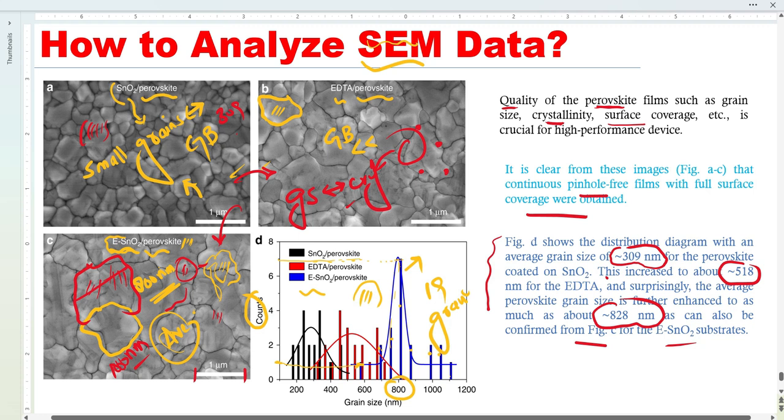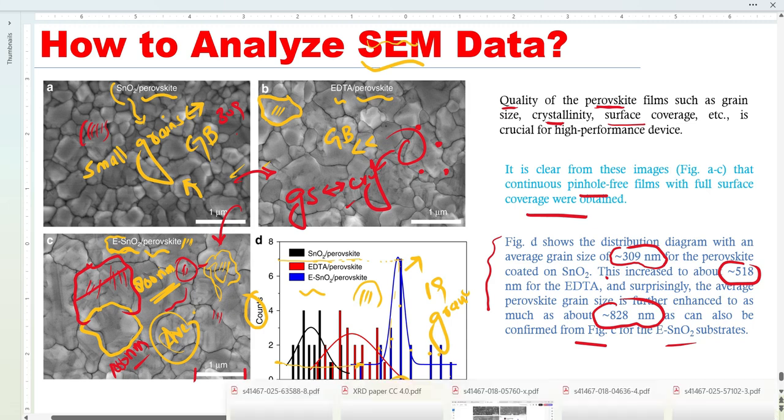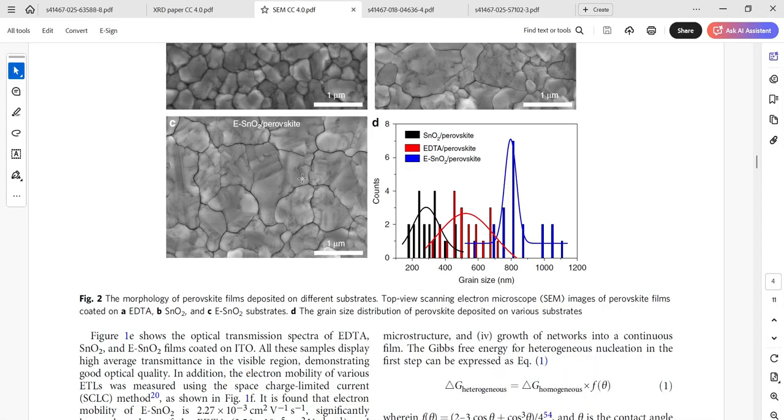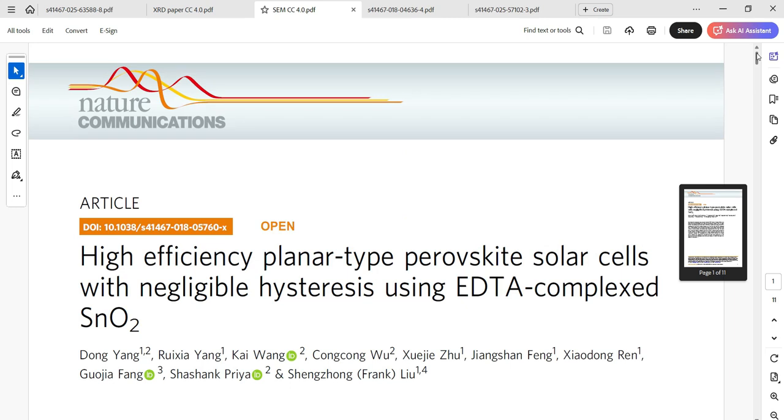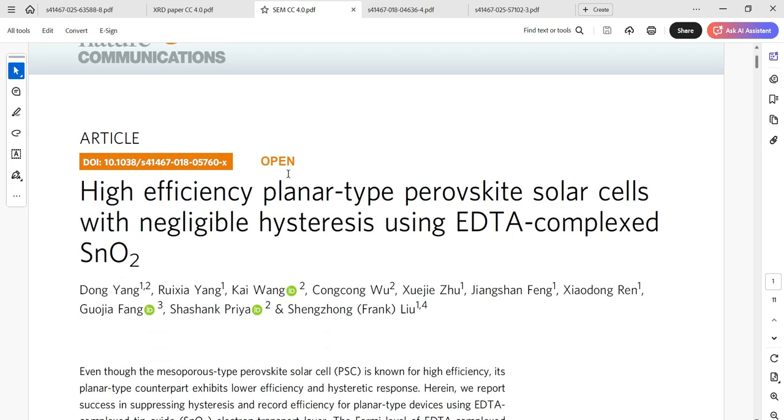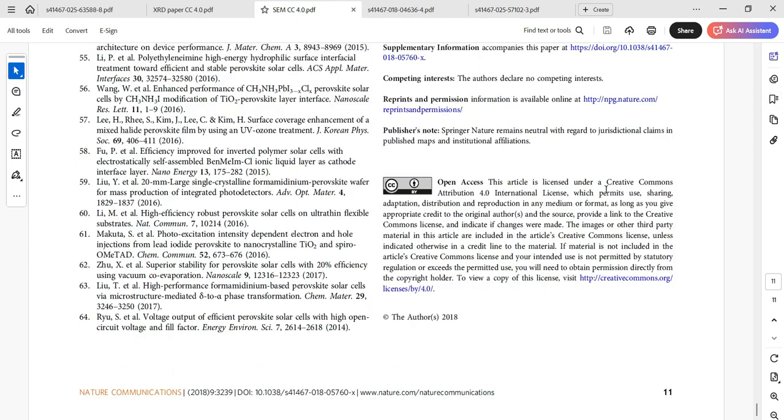So this is how to describe SEM images in a research paper. This interesting data I took from this paper. This is the data I took and it is published in Nature Communications with this title by Dong Young Tal under the CC 4.0 international license, and the link to that license is given here.